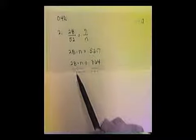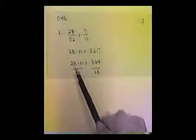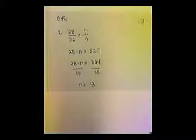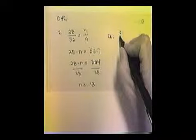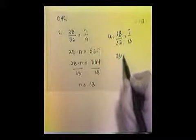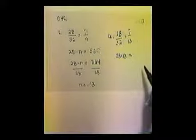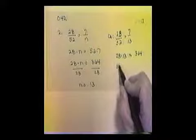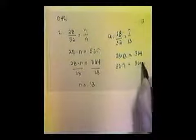Now we want to find the value of n, and to do that we need to divide both sides by the number with it. So we're going to divide both sides by 28. The 28s cancel to 1, and 364 divided by 28 turns out to be 13. Let's check: we said 28 over 52 equals 7 over 13. Check the cross products: 28 times 13 equals 364, and 52 times 7 is also 364. So it does check. n equals 13 is our answer.